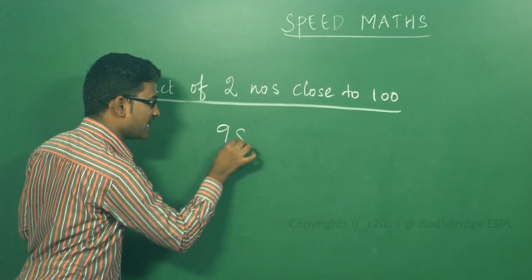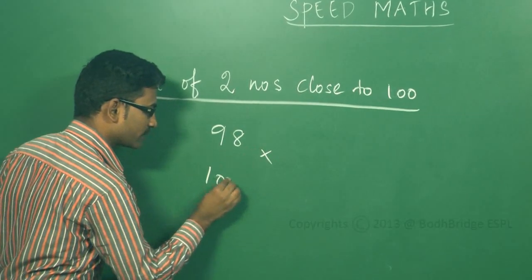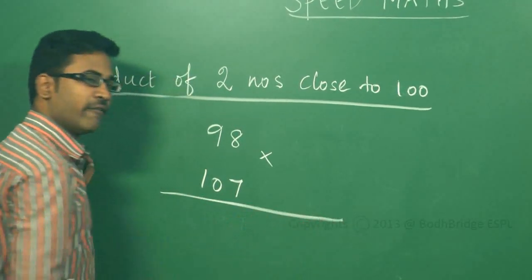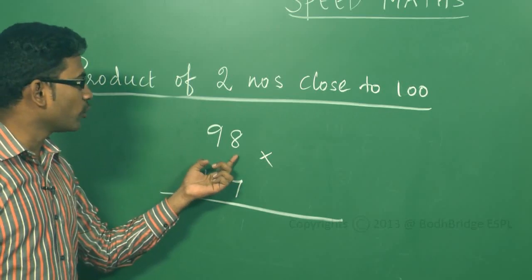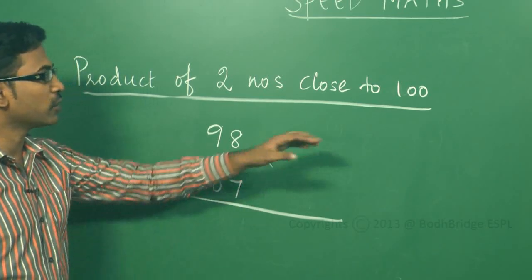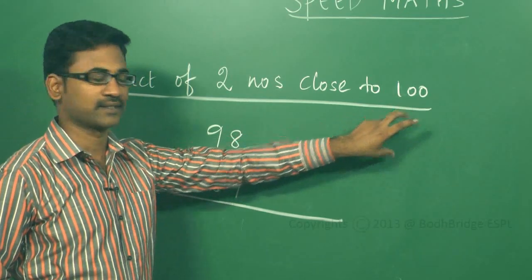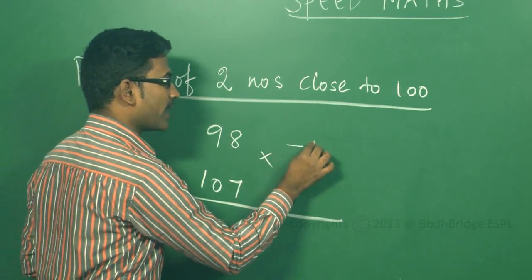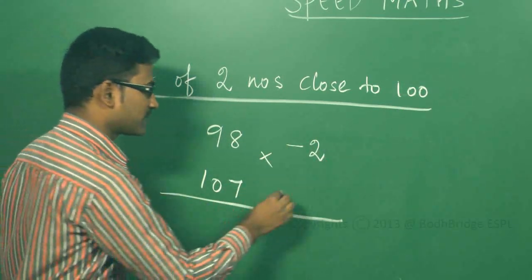If I'm multiplying 98 into 107, we have seen in the previous problem you have to check how much it is less or more than 100, because we are dealing with 100 as a base. How much is it less? It is minus 2. How much is it more? It is plus 7.